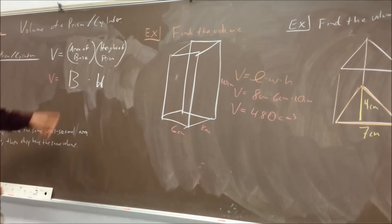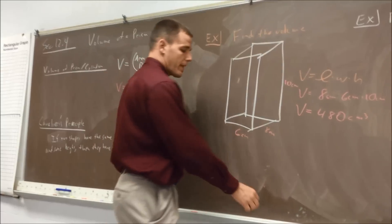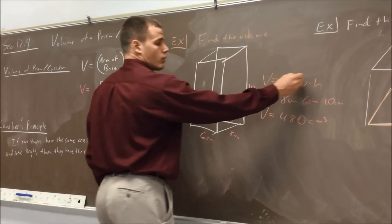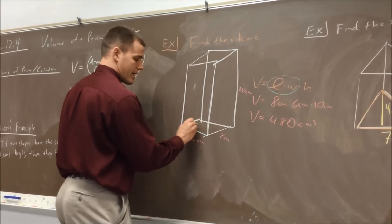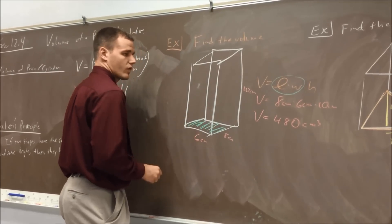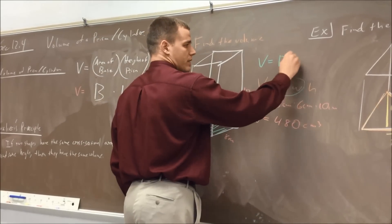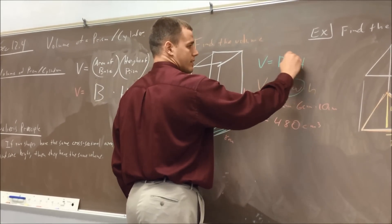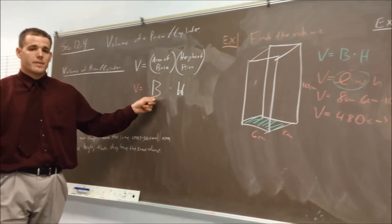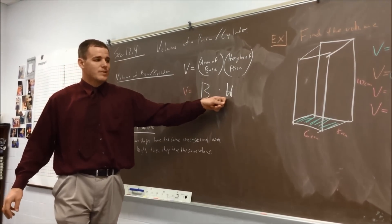You may say, well, that's not the prism formula — no problem. The length and the width together are the base, so what we really have is the area of the base times the height. That's where this formula comes from. Whatever the shape of the base is, you find the area of that and multiply it by the height of the prism.